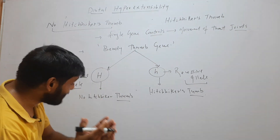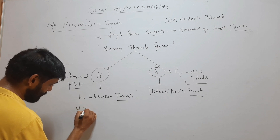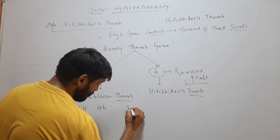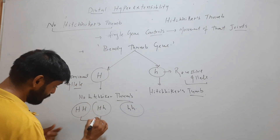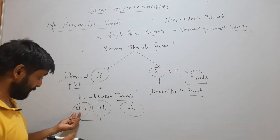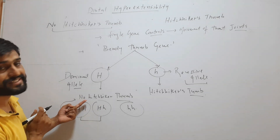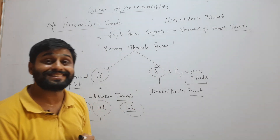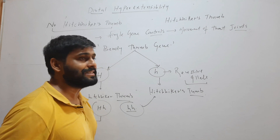So in this case there are three possibilities. A person can be capital H capital H (homozygous dominant), capital H small h (heterozygous), or small h small h (homozygous recessive). The person with capital H capital H or capital H small h will have no hitchhiker's thumb. But when any person has both recessive alleles, small h small h, he or she will have hitchhiker's thumb.